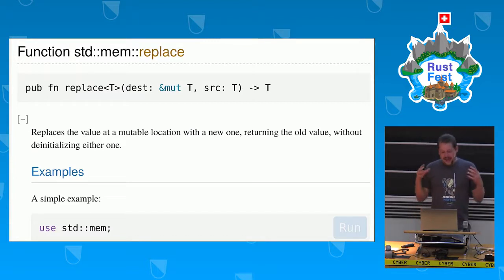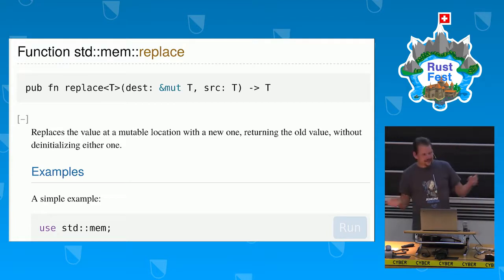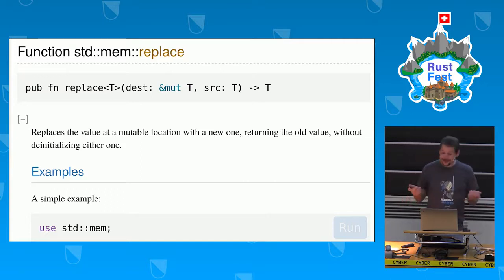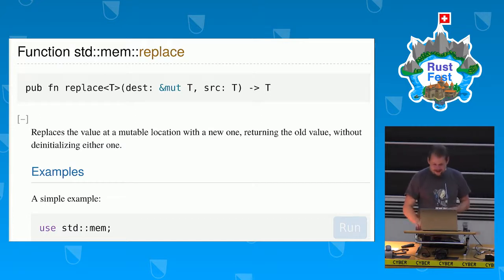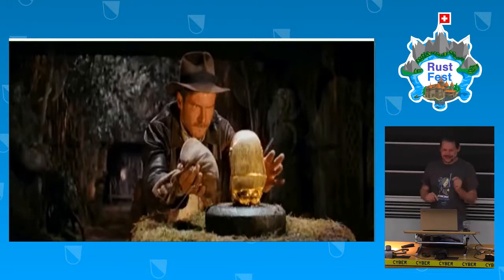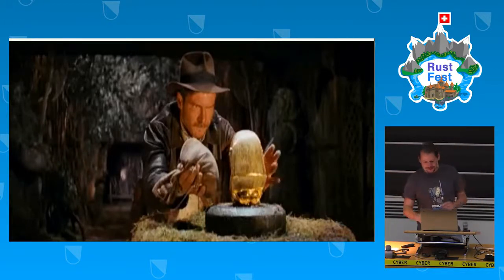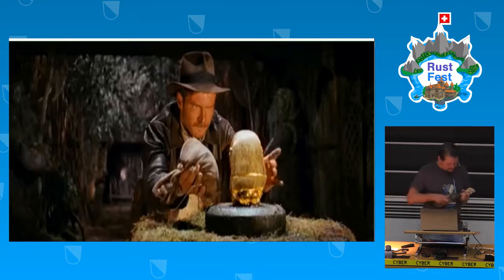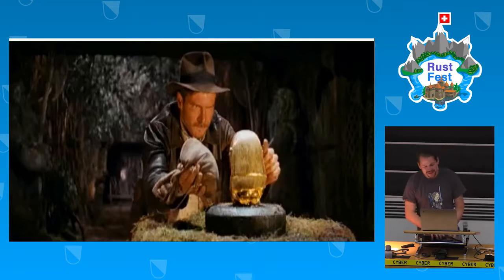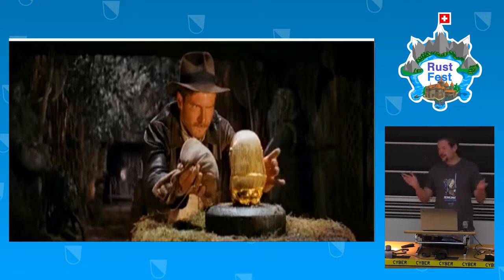Let X be a mutable slice of T, where T has a size. Then we can mem::place it in various ways. I think that is awesomely nice. Whenever you write code like this, you may hum Indiana Jones' tune. Of course, you do the same switcheroo trick he employed in the Temple of Doom.